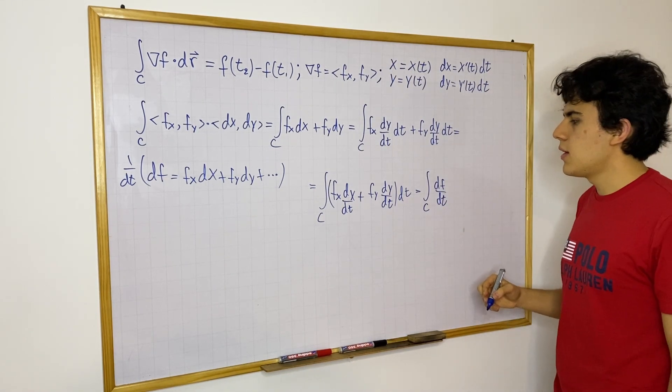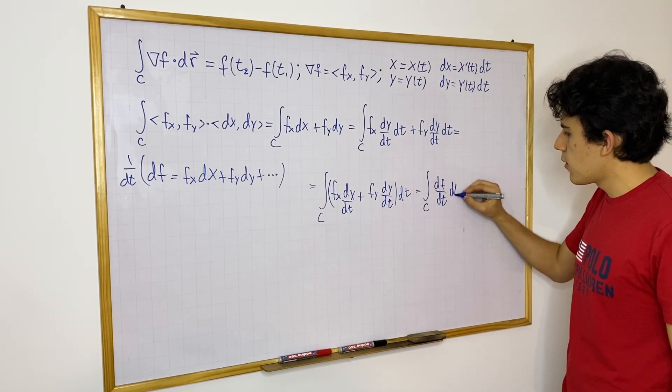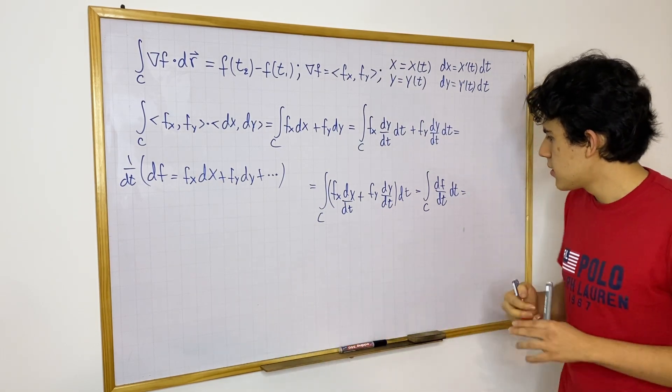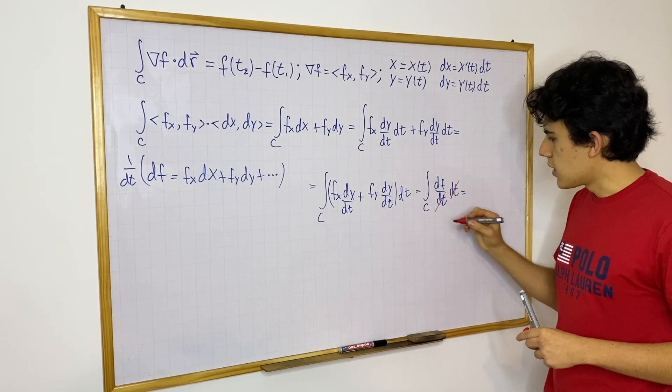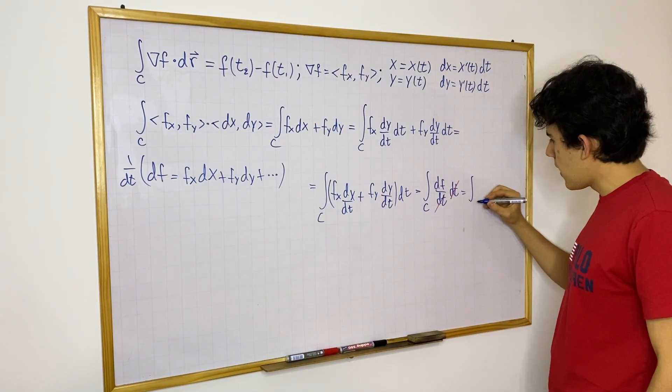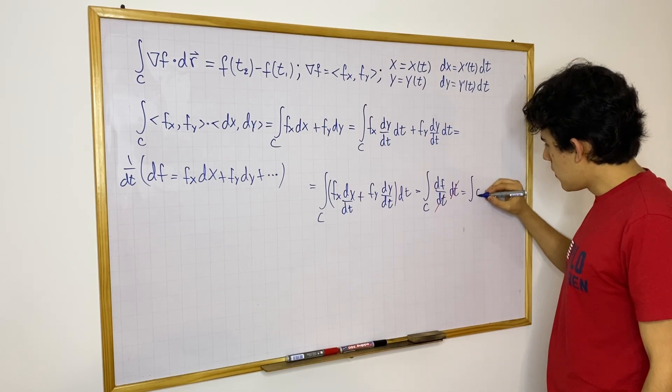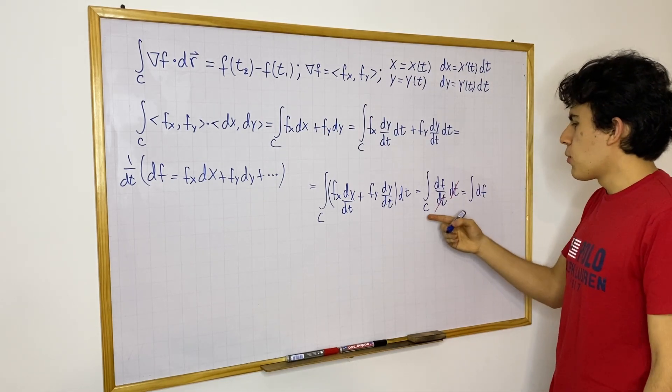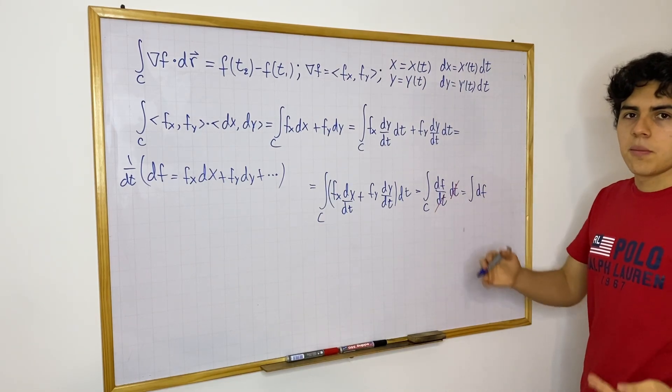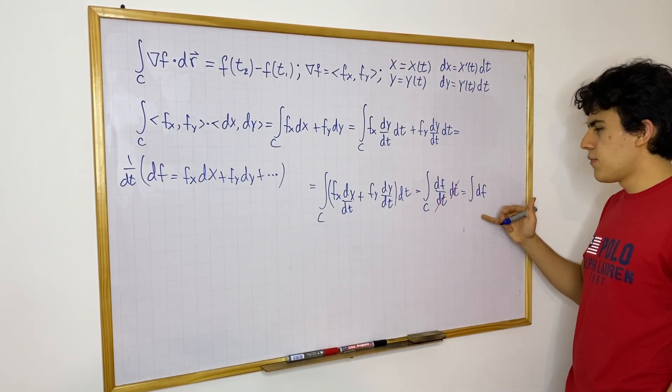And this is great because we also have another dt here, and then these two dt's, they go away, which is nice, and because they go away, well, we simply now have an integral of df. And now really the curve doesn't matter, you can just say that you have the integral of df along some bounds.